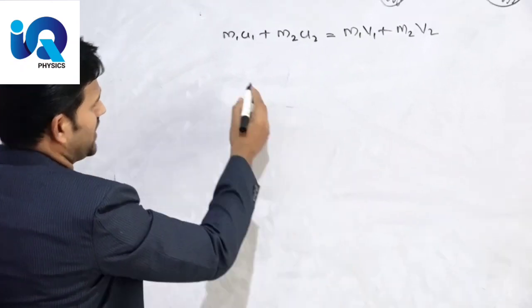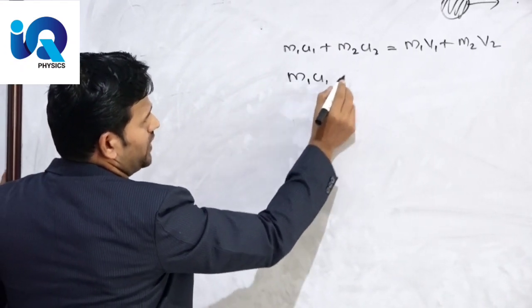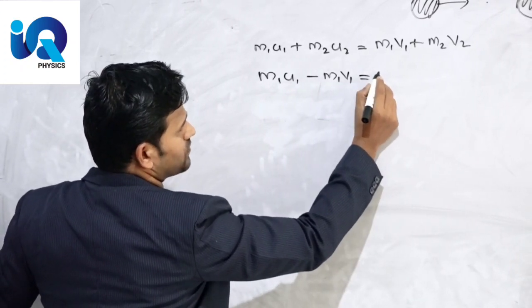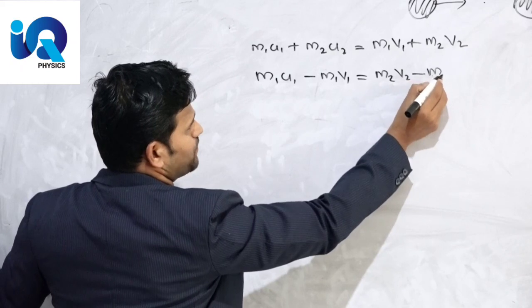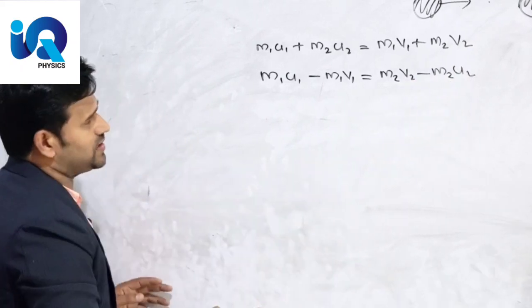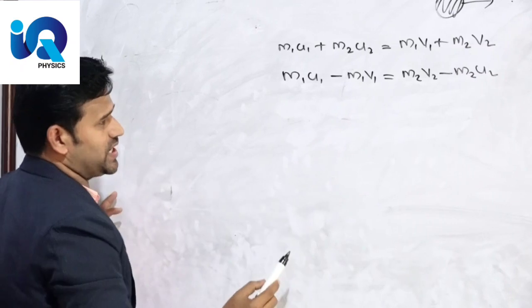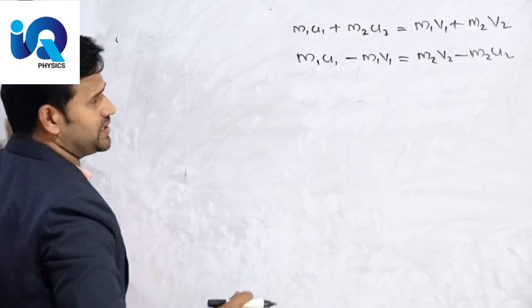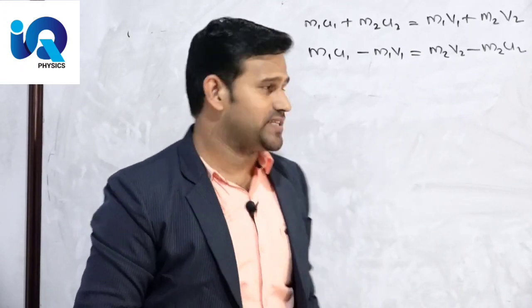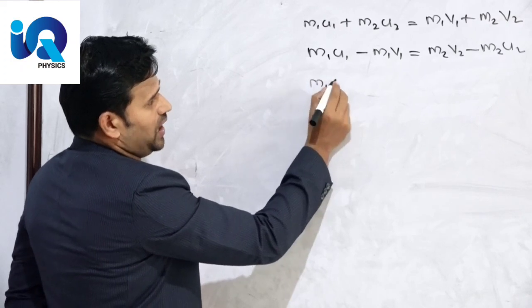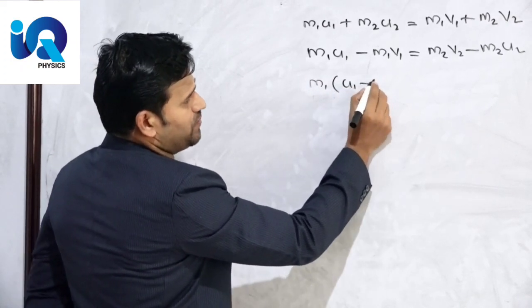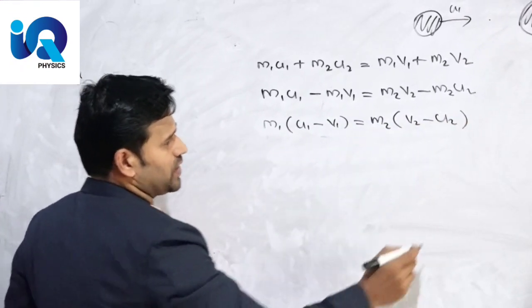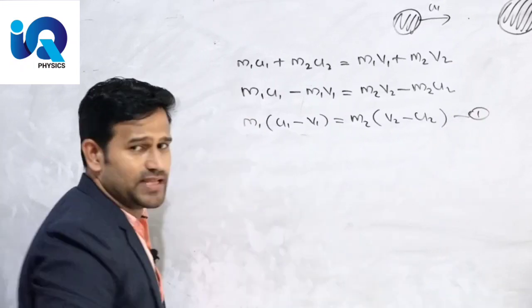Rearranging: M1U1 minus M1V1 equal to M2V2 minus M2U2. This is Equation number one.